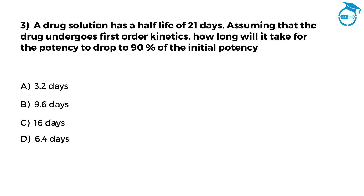A drug solution has a half-life of 21 days. Assuming that the drug undergoes first-order kinetics, how long will it take for the potency to drop to 90% of the initial potency? Option A: 3.2 days. Option B: 9.6 days. Option C: 16 days. Option D: 6.4 days. Mention your answer in the comments — you have got 7 seconds.